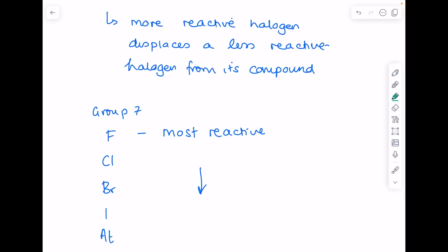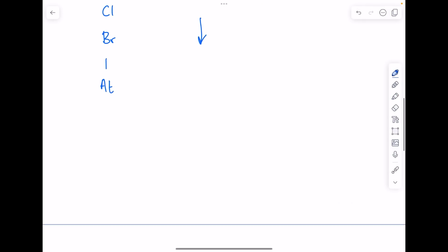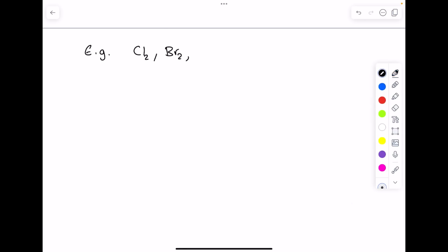Make sure you obey that when considering a more reactive halogen displaces a less reactive halogen from its compound. If they're being really mean, you could be asked to plan an investigation which proves the halogen order of reactivity. For example, if you're given chlorine, bromine and iodine, how do you determine the reactivity?